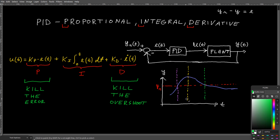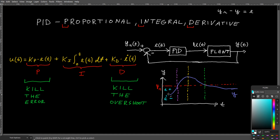If I divide the response into sections, my error is positive in the first section because YR is greater than real Y, up until the dashed purple line. However, error dot is negative because as you approach your reference value, your error is decreasing — it's getting smaller, so its time derivative is negative. In the next section, your error is negative because Y is bigger than YR, and error dot is also negative because that negative error is getting more negative. Then in the following section, your error is still negative but it's becoming less negative, so error dot is positive.